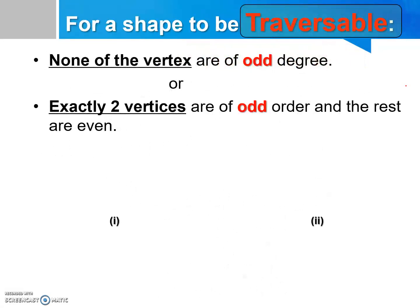There are several important criteria for a shape to be traversable. First of all, none of the vertices are of odd degree, or there are exactly two vertices of odd order and the rest are even. It means that a network can be said as traversable if there are only zero or exactly two vertices of odd degree.